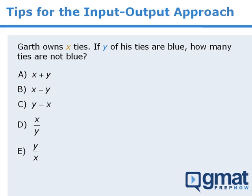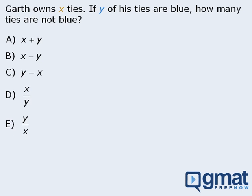In an earlier lesson, we solved this question in which Garth owns a total of x ties, and y of these ties are blue. Our goal was to determine which of the five algebraic expressions represents the number of ties that are not blue. Using the input-output approach, we chose values for the variables x and y, and determined that if x equals 10 and y equals 3, the number of non-blue ties must equal 7.